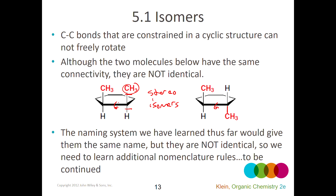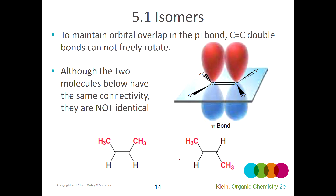This one would be called cis-1,2-dimethylcyclohexane and the other trans-1,2-dimethylcyclohexane. Since they're not identical — not superimposable or interconvertible — they have to have different names. You can also do cis-trans isomers on a double bond. When I have a double bond, just like a ring it can't rotate — the ring constrains it so it can't fully rotate. If I have both methyl groups on the same side that's different from having them on opposite sides.